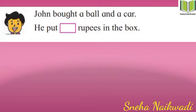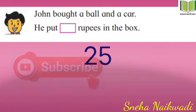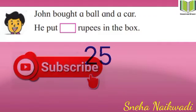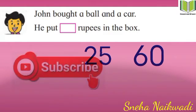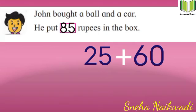John bought a ball and a car — he put how many rupees in the box? The price of the ball is 25 rupees and the price of the car is 60 rupees. So 60 plus 25 makes 85 rupees. John put 85 rupees in the box.